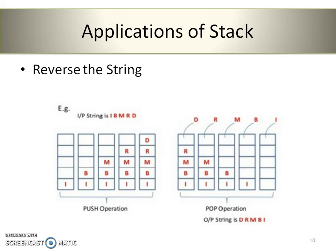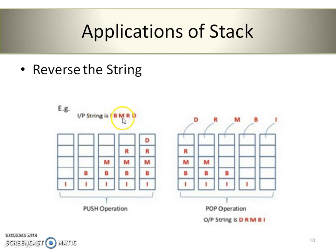Let's take a closer look at reversing a string. Consider a stack where push operations are performed character by character. While popping elements one by one, due to the LIFO property, the last inserted element 'd' will be popped first, then 'r', then 'm', then 'b', and 'i'. So the input string is i, b, m, r, d — and the output string will be d, r, m, b, i — which is nothing but the reverse of the string.